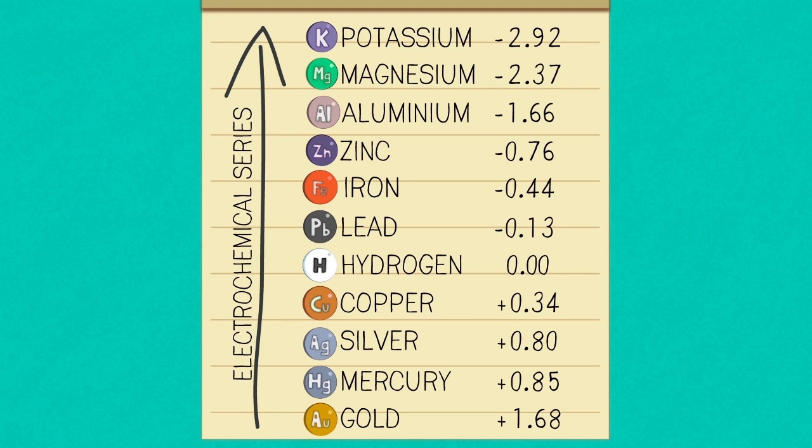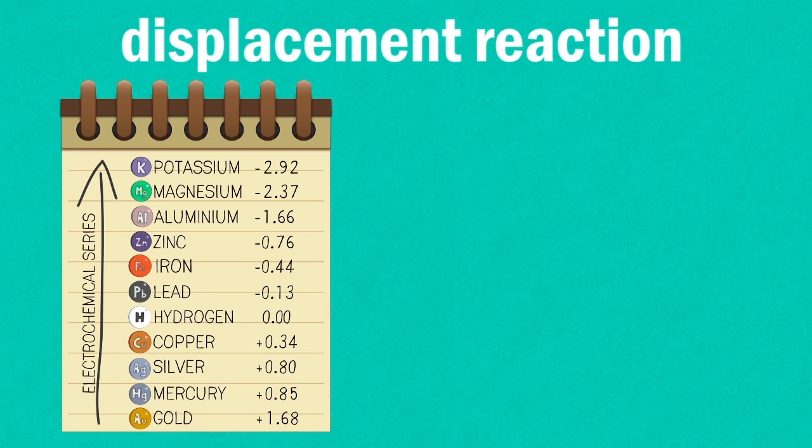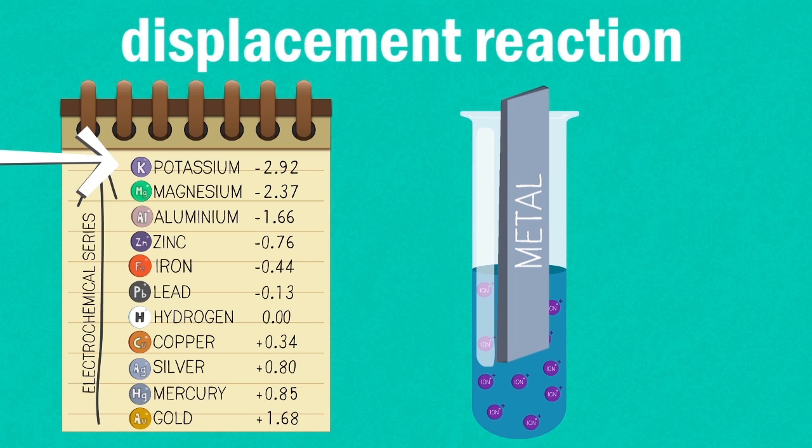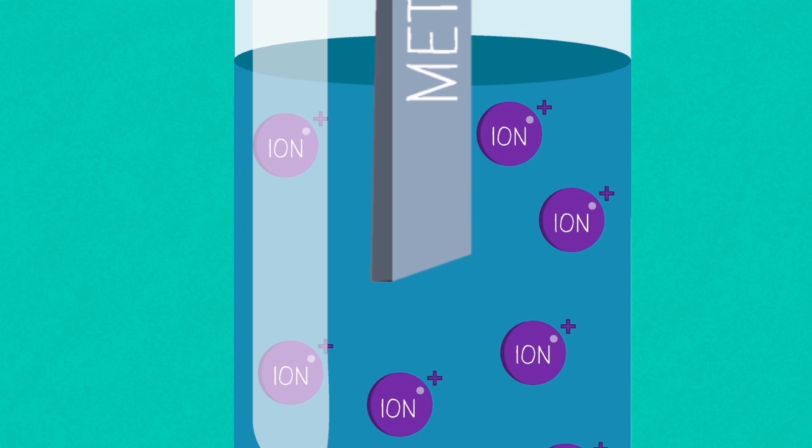You can also use the electrochemical series to predict a displacement reaction. When a metal from the electrochemical series is mixed with ions of a metal lower down in the series, the atoms of the more reactive metal push their electrons onto ions of the less reactive metal.